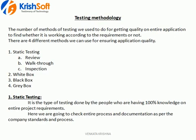For example, if some application is given to the testing team and the testing team identifies hundreds of bugs or defects, what will management understand? It means the development people didn't develop the application properly, or the development team didn't understand the requirements properly. That is the reason development people always try to reduce the number of defects before handing over to the testing team.